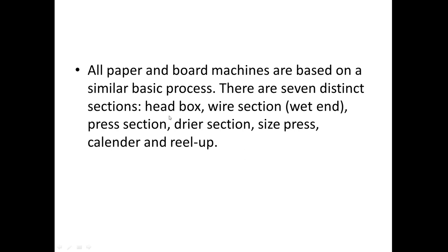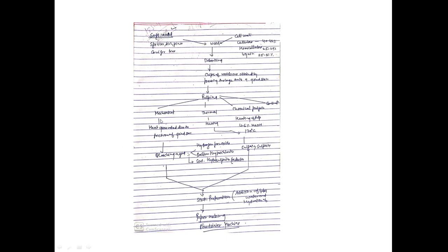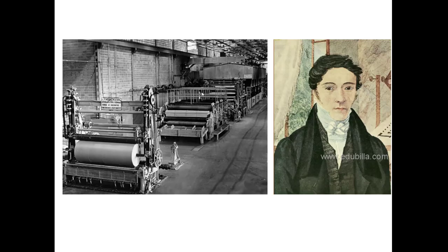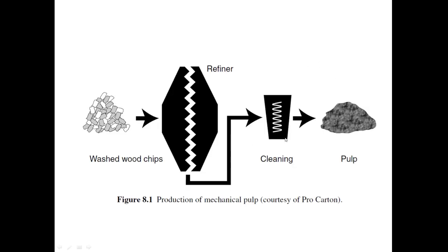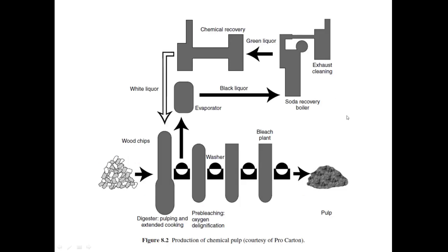All paper and board machines are based on similar basic processes. There are seven distinct sections in the Fourdrinier machine: head box, wire section, press section, dryer section, size press, calender, and reel. The machine can process fresh pulp — whether mechanical or chemical — or recycled paper pulp.